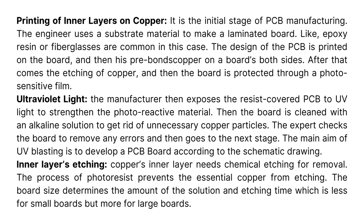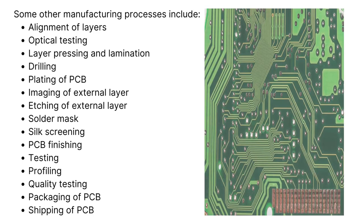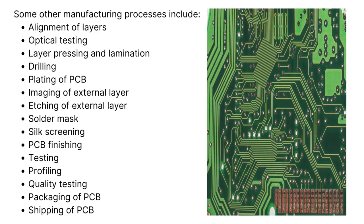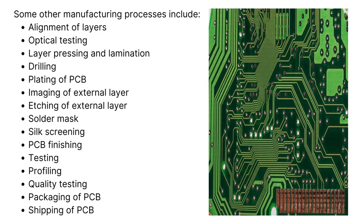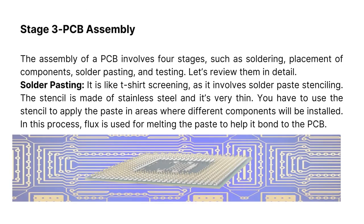Inner layers etching: copper's inner layer needs chemical etching for removal. The process of photoresist prevents the essential copper from etching. The board size determines the amount of solution and etching time, which is less for small boards but more for large boards. Other manufacturing processes include alignment of layers, optical testing, layer pressing and lamination, drilling, plating, imaging and etching of external layers, solder mask, silk screening, PCB finishing, testing, profiling, quality testing, and packaging and shipping of PCB.